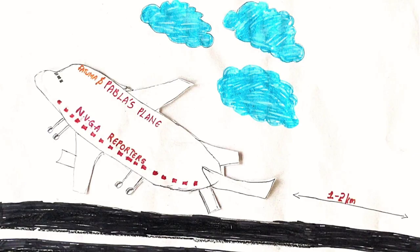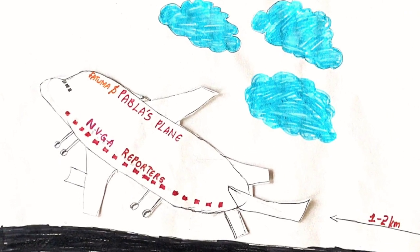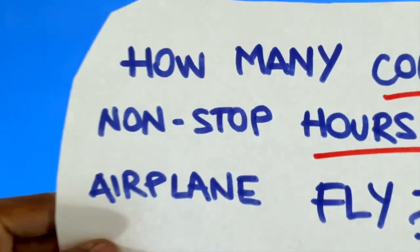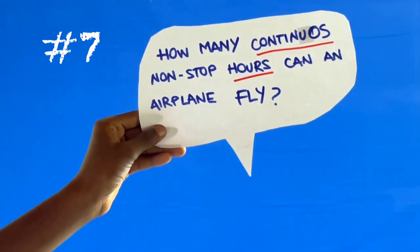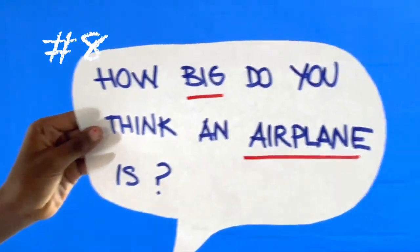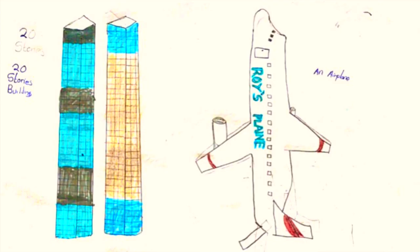An aeroplane needs one to two kilometers of runway so that it can take off. An aeroplane can fly for 18 to 21 hours non-stop. A plane is 40 to 50 meters long and it is as big as a 20-story building.